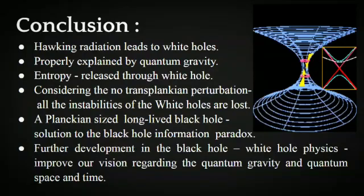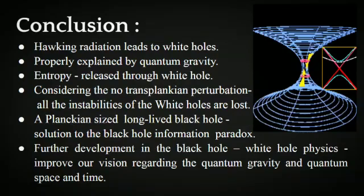In conclusion, understanding the evolution of white holes from black holes is important to resolve many intriguing problems and paradoxes associated with exotic remnants, most significantly the black hole remnants in our universe. Black hole evaporation leads us to quantum tunneling of black holes to white holes. The entropy of black holes can be released through the white hole recoil. A Planckian-sized, long-lived white hole remnant can provide a proper solution to the black hole information paradox compared to other approaches today. Further development in theories regarding black hole–white hole physics can provide our vision regarding quantum gravity and quantum spacetime.